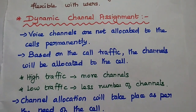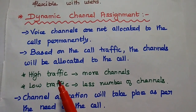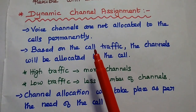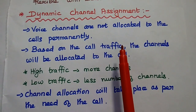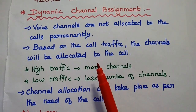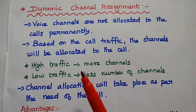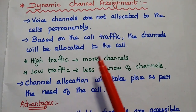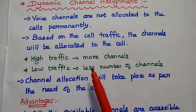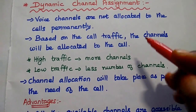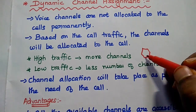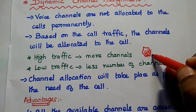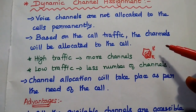The next concept is dynamic channel assignment. In this, voice channels are not allocated to the cells permanently, so there is no fixed number of channels allocated to each cell. Only based on the call request, channels will be allocated to the cell. If there are more number of calls — that is, high traffic — then more channels are assigned to that cell. If the traffic is less, fewer channels are allocated. For example, if the cell has a call request for 50, then only 50 channels are allocated; if the number of calls increases, the number of channels also increases.